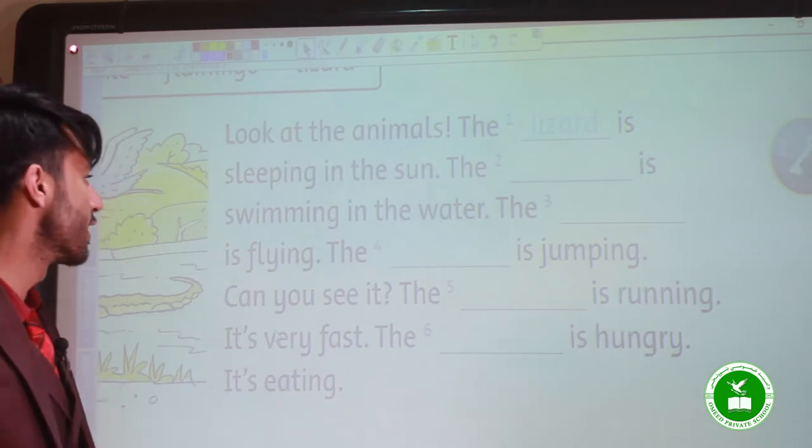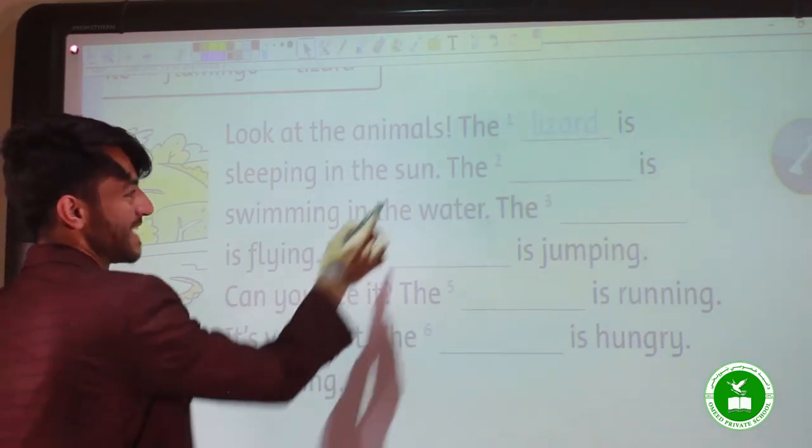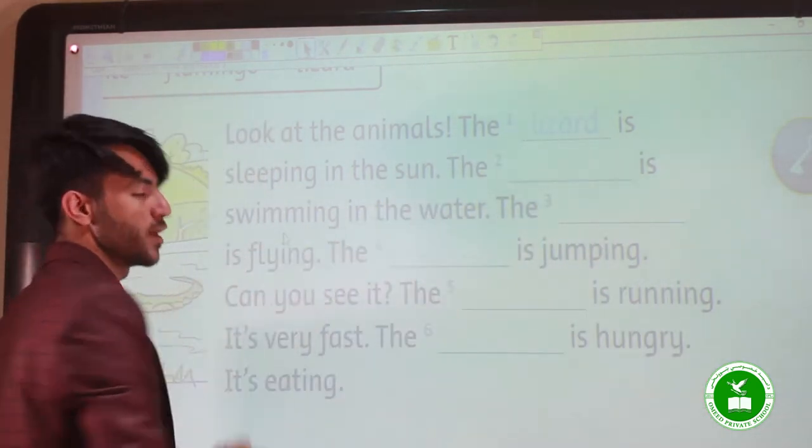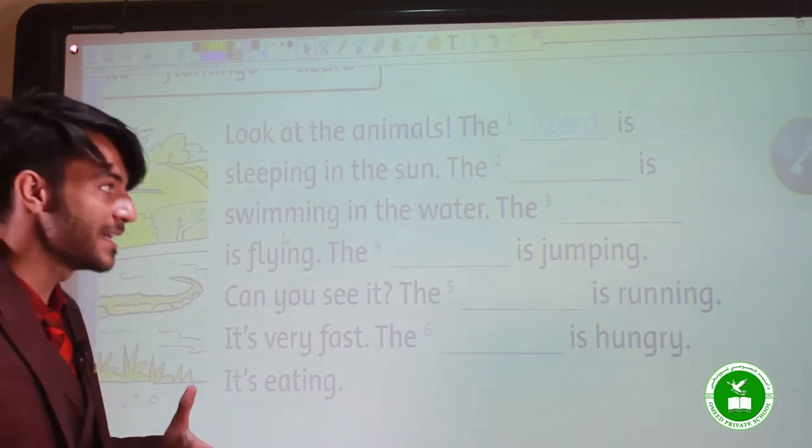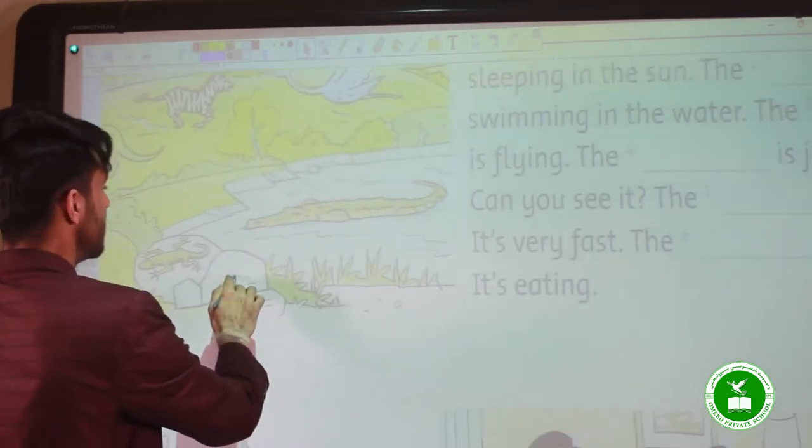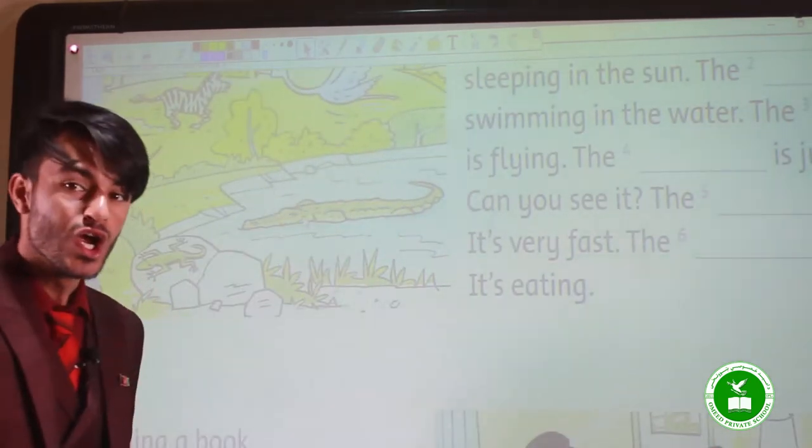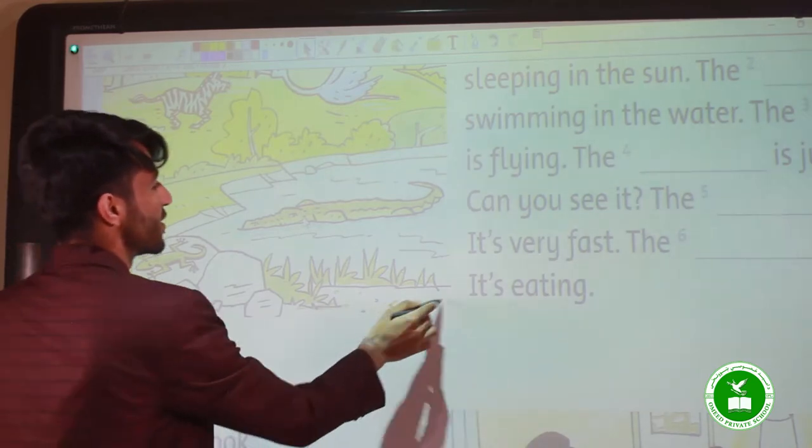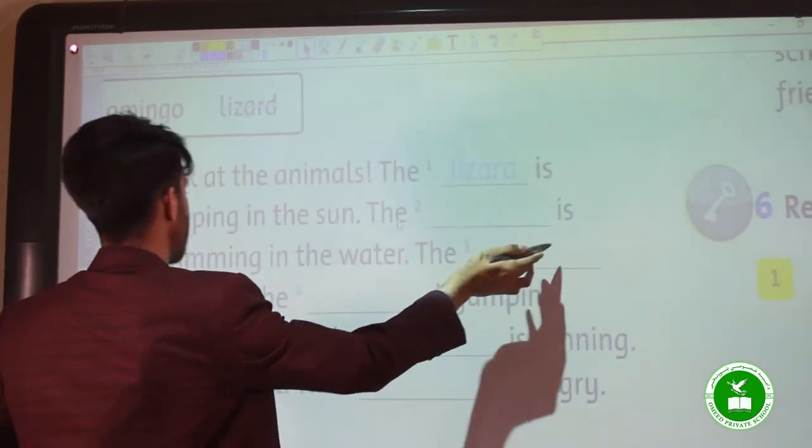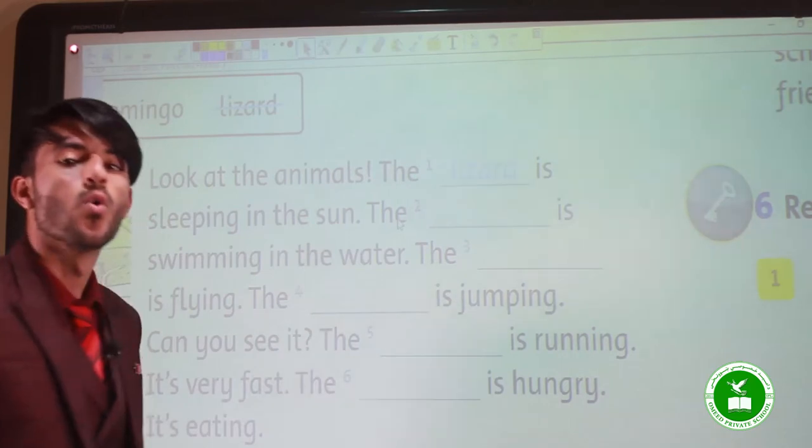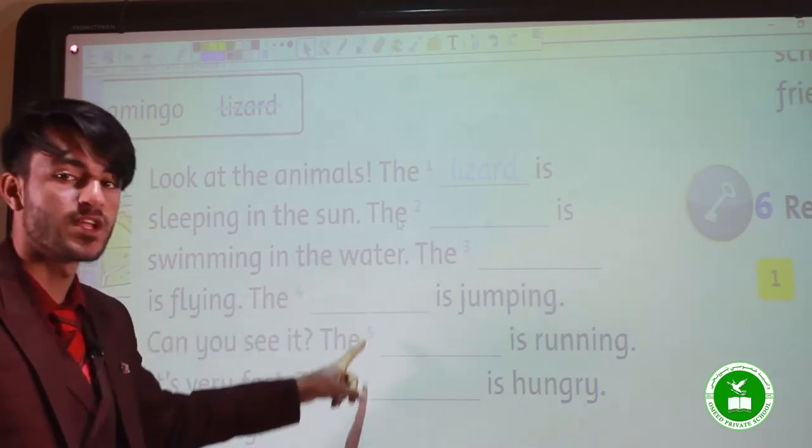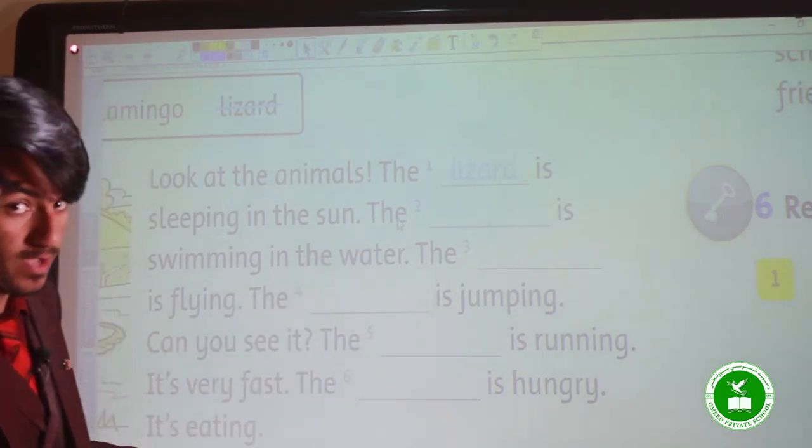That's how you complete these sentences. For example, the second one: the crocodile is swimming in the water. So here, number two, you say the crocodile is swimming in the water. Let's go to the other part. You have to complete these sentences yourselves.